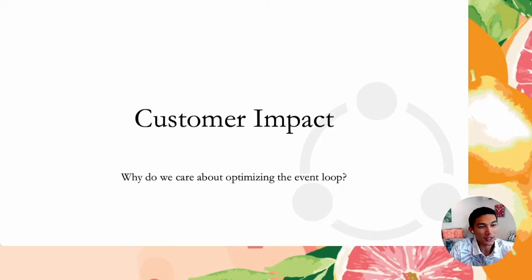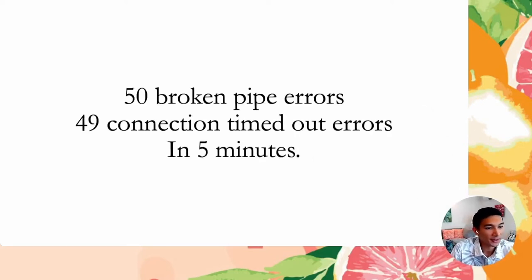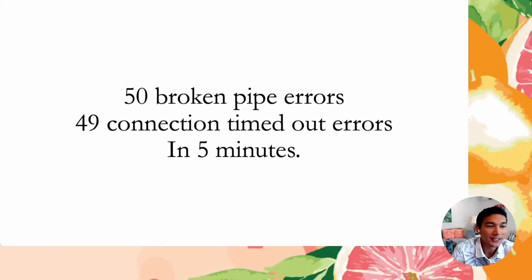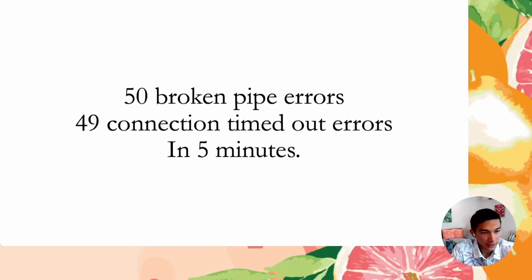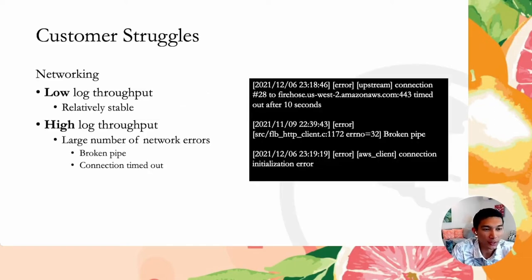Let's begin with the customer impact — why should we care about the event loop in the first place and optimizing it? Our customers are sharing with us that they're getting like 50 broken pipe errors and 49 connection timeout errors within a span of five minutes, and they're seeing this just appear in their Fluentbit logs. Each time you see one of these errors, it triggers a retry in Fluentbit, meaning there's a genuine network error occurring — about 100 errors in five minutes, which can degrade performance.